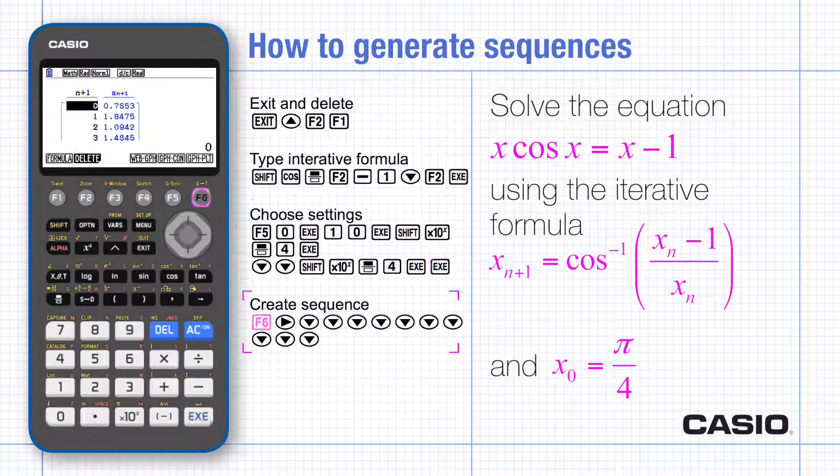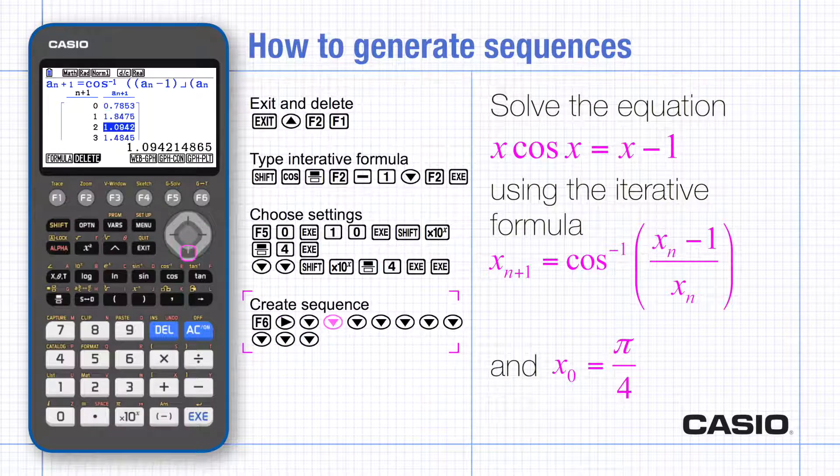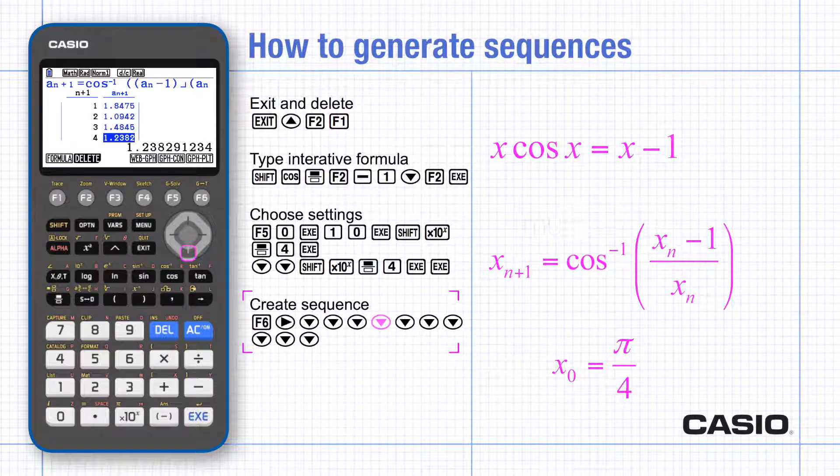Go to table to see the sequence, and you can scroll across for more decimal places and down to see later values.